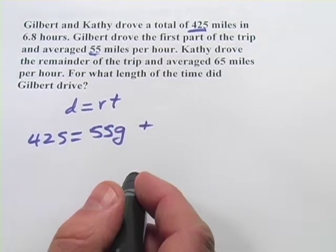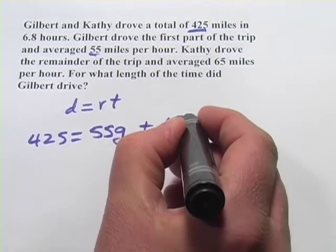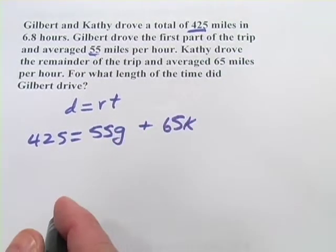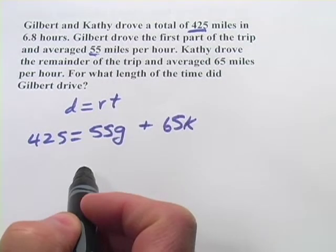Now we add to that Kathy's rate and Kathy's time. Her rate is 65 miles per hour. And we'll call K the amount of time she drove. So that's for the total trip. So that's one equation with two variables.